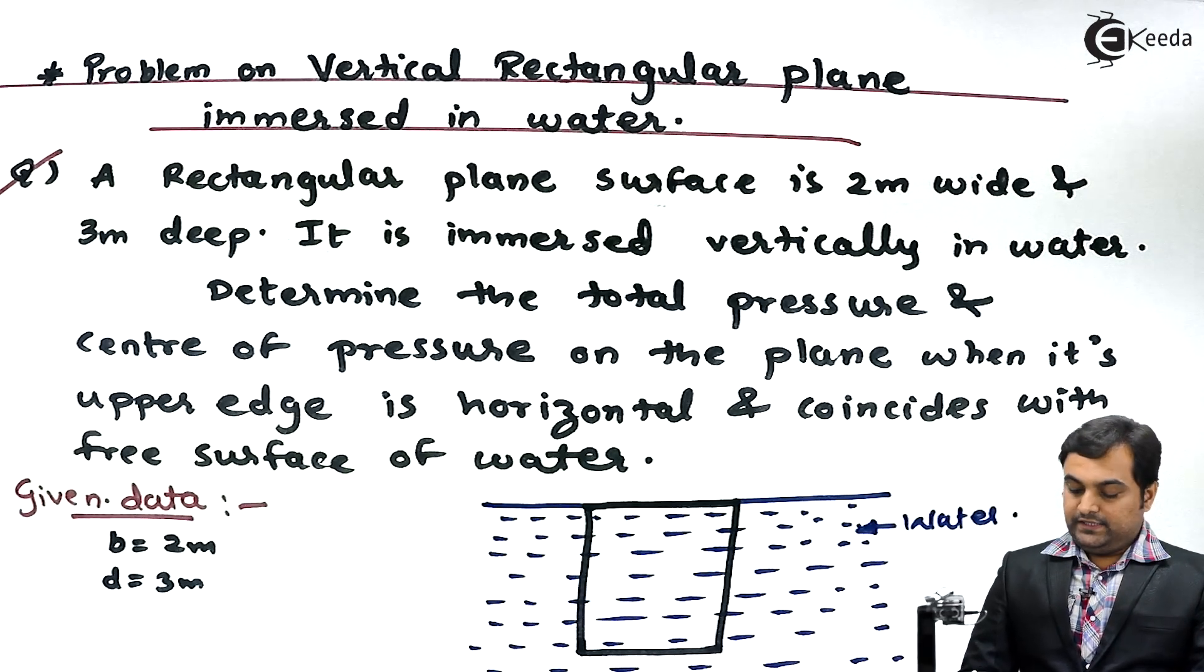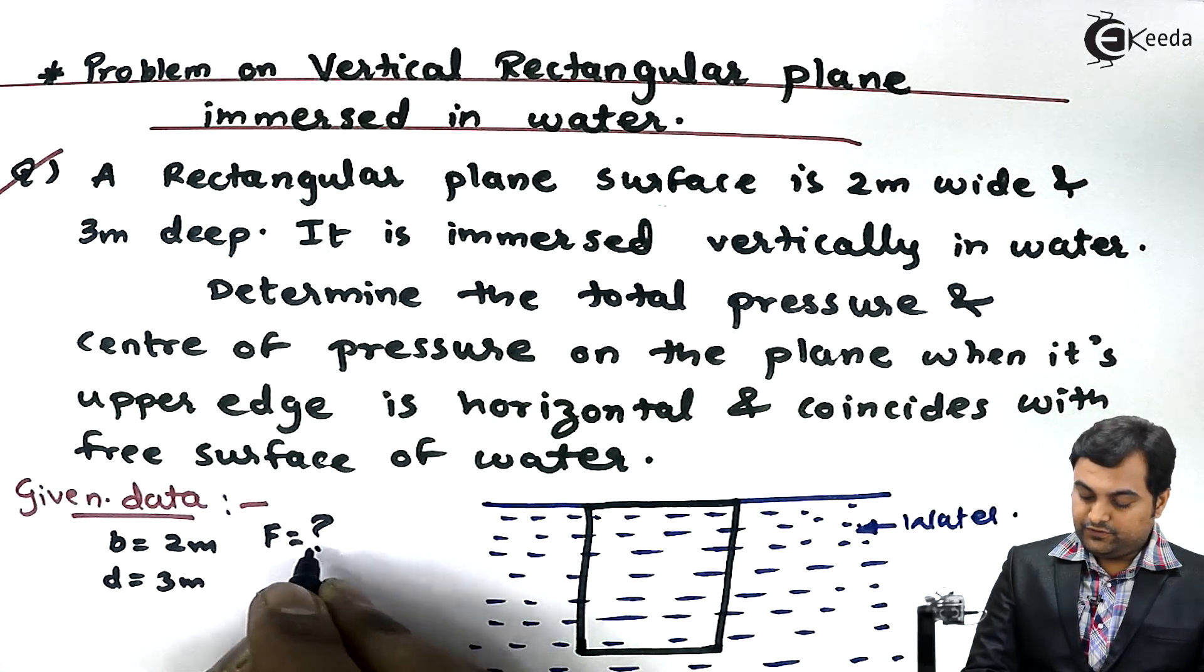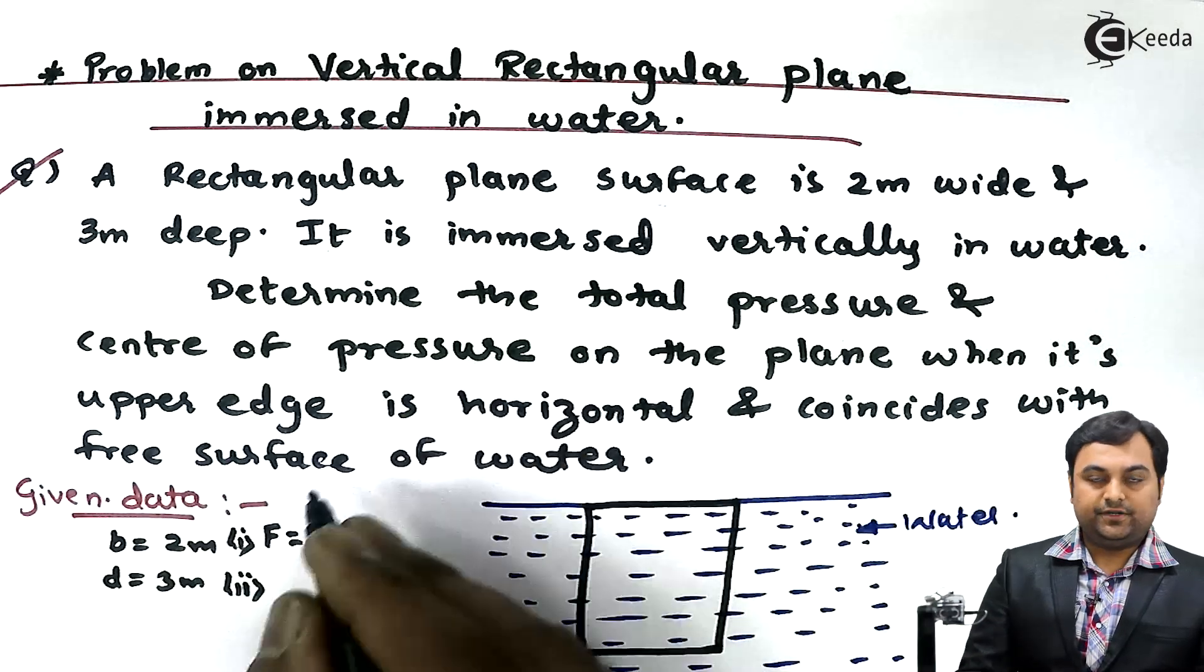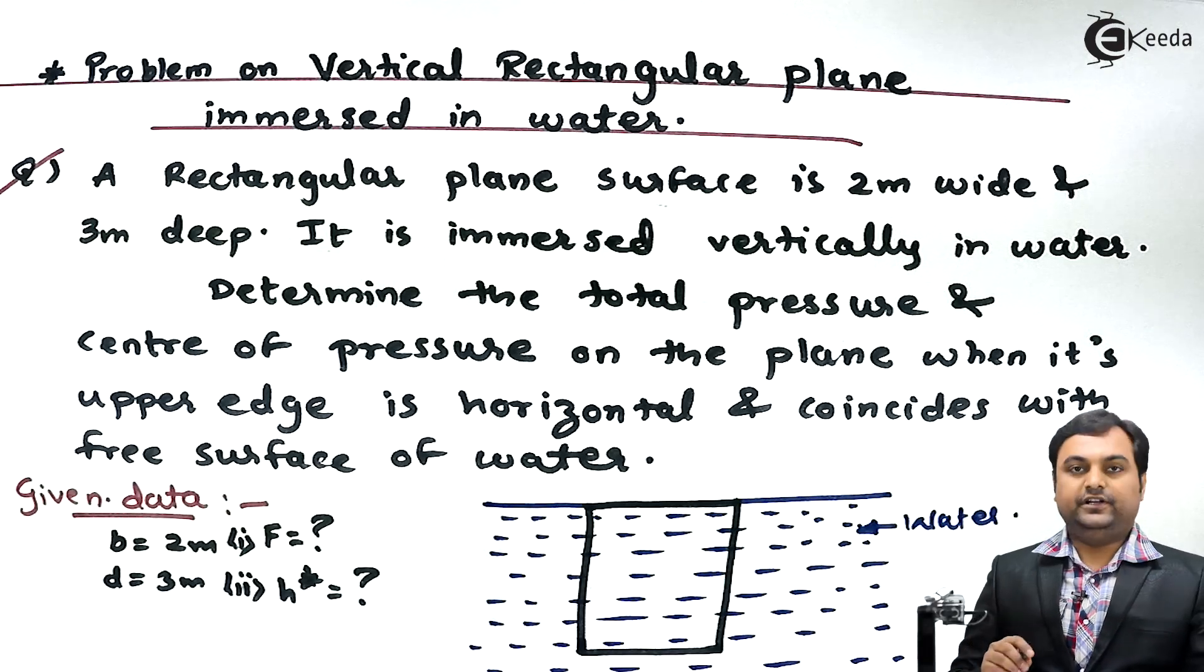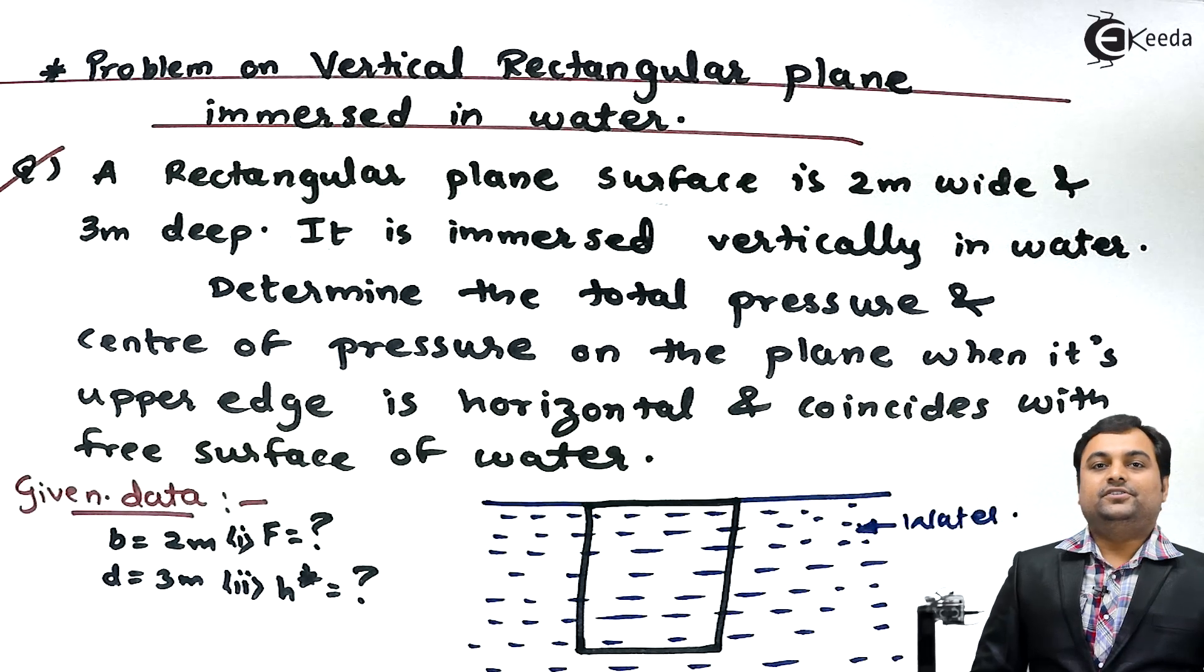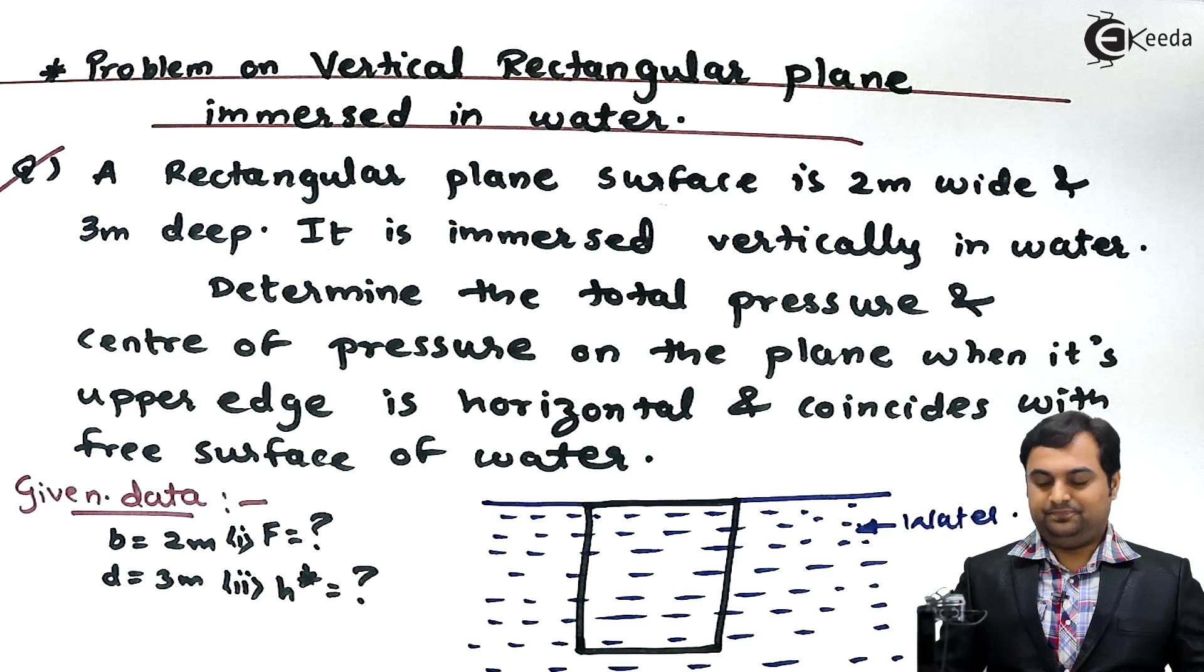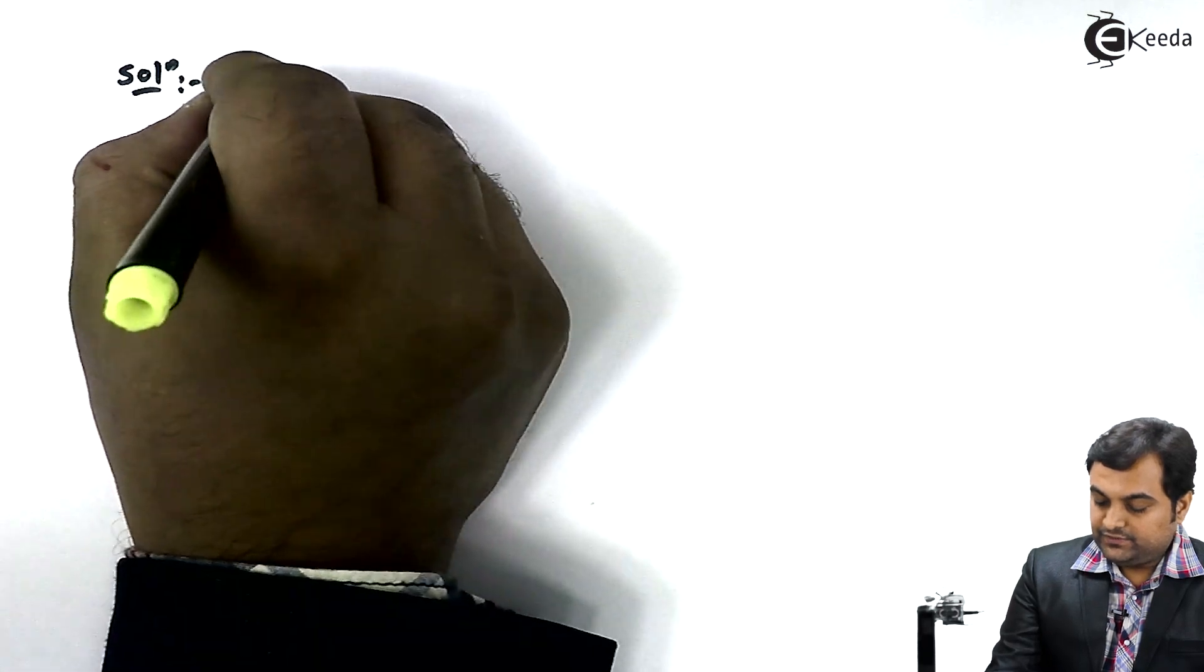Now we have to find out the total pressure - total pressure is nothing but hydrostatic force - and center of pressure means H star. That is, we have to find out a single point where this hydrostatic force acts. Now with these data available, let us try to get the solution for this problem.